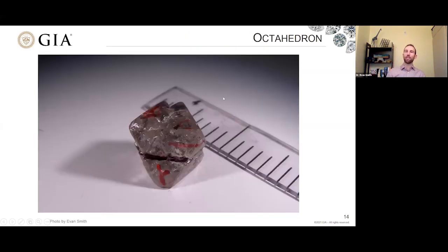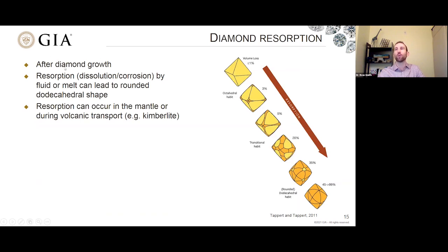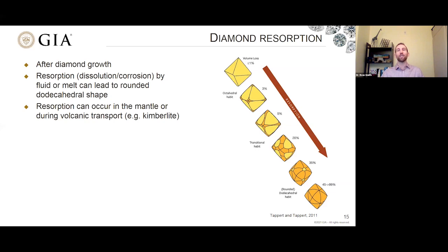Back to the natural diamonds themselves. Here's an octahedron — I've drawn on it to show some internal features. What I want you to see is that the corners and edges of this octahedral crystal are a little bit rounded. This reflects something that happens to octahedral crystals quite often when they're sitting in the mantle or during their volcanic transport up to the surface — they get a little bit dissolved or resorbed. This phenomenon called resorption is like dissolution or corrosion of the crystal by fluids or melts, which can change the crystal shape, either while sitting in the mantle for millions of years or on its way up in hot, volatile-rich magma.